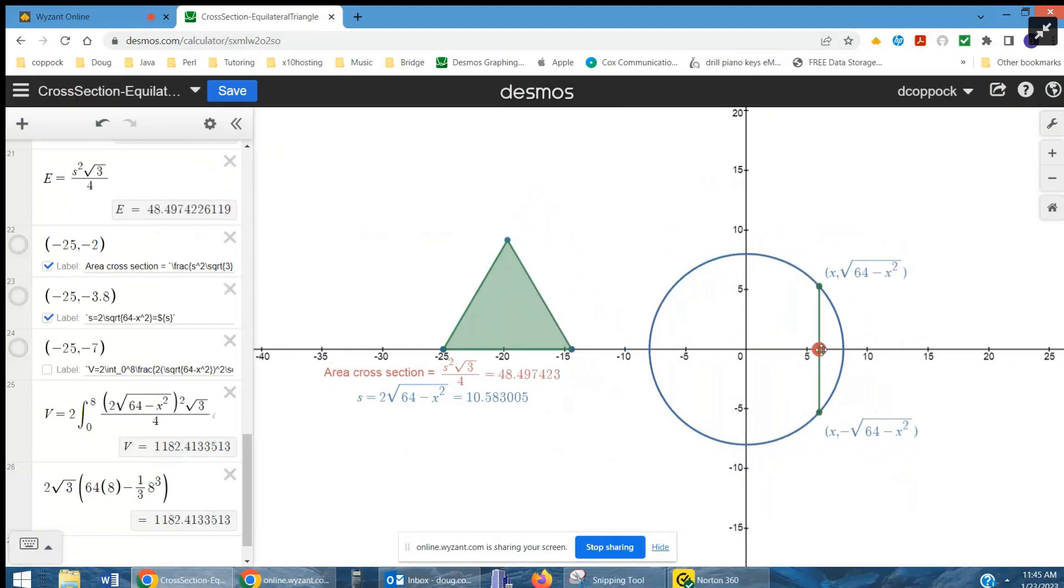And so what we're doing to find the volume of the solid that's generated by these cross sections perpendicular to the x-axis is integrating from negative 8 to 8 for this formula for the area.